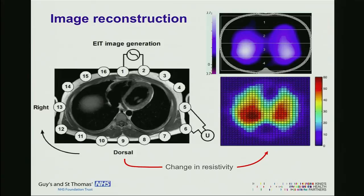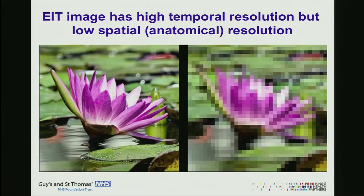Despite the very fast responsiveness, the anatomical resolution — the spatial resolution — is not very good; it's quite poor. But that is not necessarily a bad point about EIT. We need to recognize that limitation because it is not a substitute for CT scan; it's not an anatomical technique. Resolution depends on the number of electrodes, the size of the chest, and individual patient variation. It tends to be better at the periphery near the electrodes and a little bit wider at the center of the image.